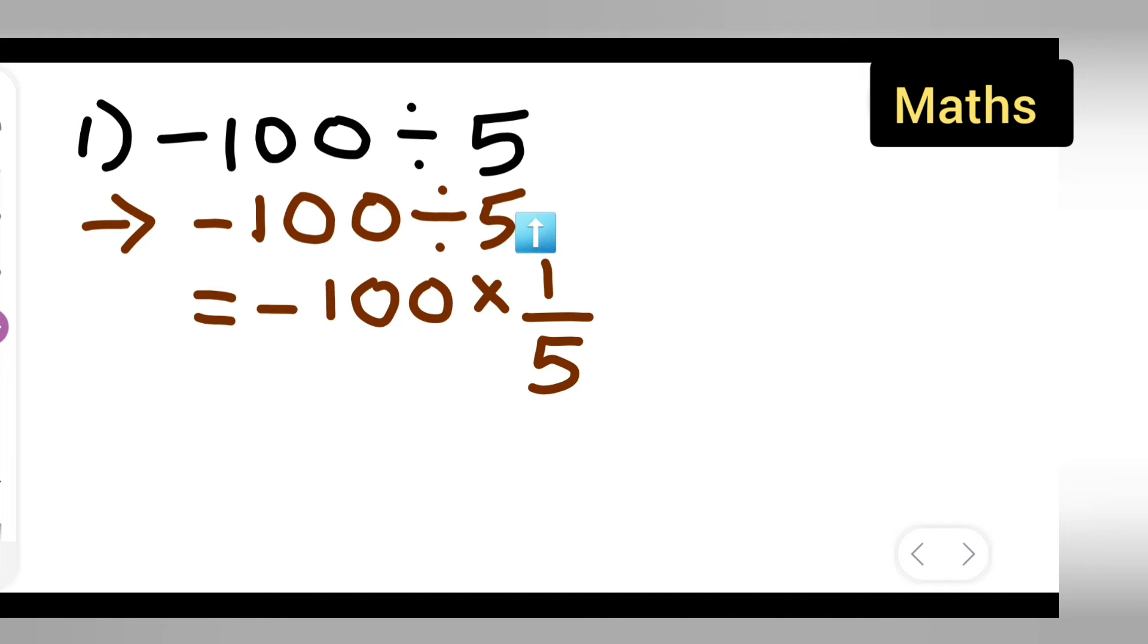You have to multiply this number with the reciprocal of this, so it is 1 upon 5. What you are going to get is minus 100 upon 5. Cancel it: 5 ones are 5, 5 twos are 10, and 0.